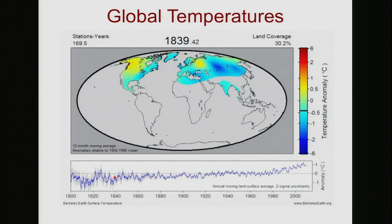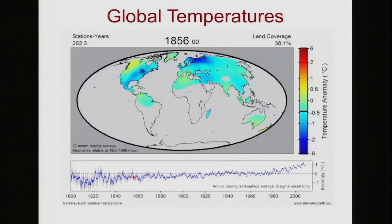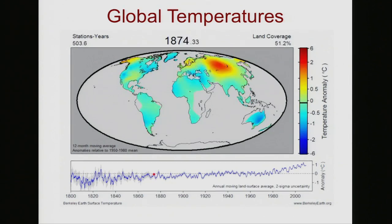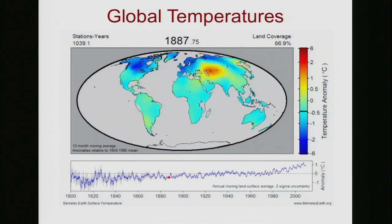Now we're up to the 1830s. The temperature hasn't shown any particular trend — by current standards, it's pretty cool most of the time back then. It might be one or two warm years, then it's back and cool most of the time. Now we're getting into the beginnings of the Industrial Revolution, and there's not a whole lot of change detectable at first.